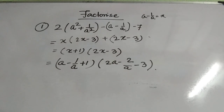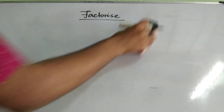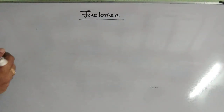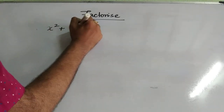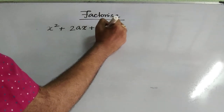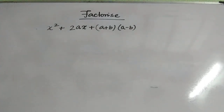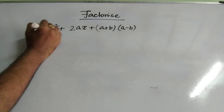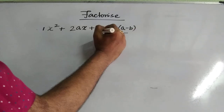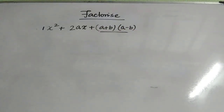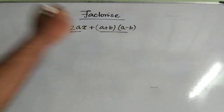Next, the second factorization is x² + 2ax + (a + b)(a - b). The coefficient of x² is 1 and the constant term is (a + b)(a - b). Multiplying 1 by the constant gives the same result: (a + b)(a - b). The key observation is that (a + b) + (a - b) = 2a, which is exactly our middle term coefficient.